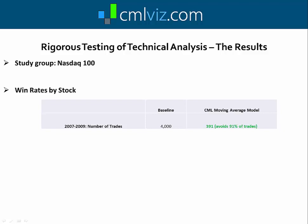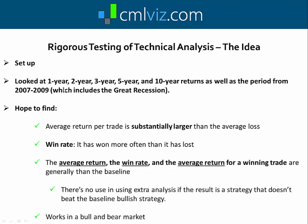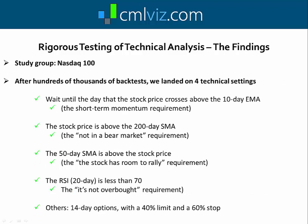To review: our setup looked at 1-year, 2-year, 3-year, 5-year, and 10-year returns, plus 2007 to 2009. We found an average return per trade substantially larger than the average loss, a win rate at or near 50% across the board, and the average return, win rate, and average winning trade return were generally larger than the baseline — working in both bull and bear markets. After hundreds of thousands of back tests, we landed on the four technical settings: short-term momentum, not in a bear market, room to rally, and not overbought — with 14-day options, a 40% limit, and a 60% stop.